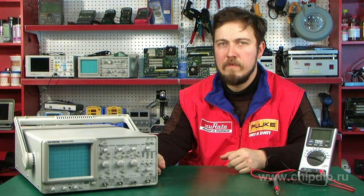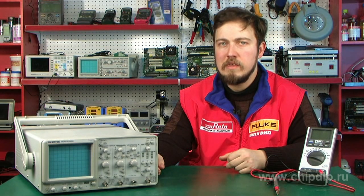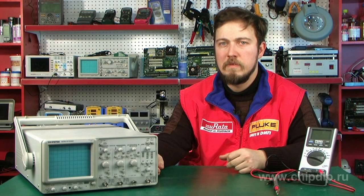Therefore, in practice, a slightly more complex layout based on two operational amplifiers is used. Another name for this layout is voltage-controlled current source. This circuit is intended to supply the load with a current whose strength does not depend on the output voltage of the operational amplifier, as it is regulated only by the input voltage of the circuit.